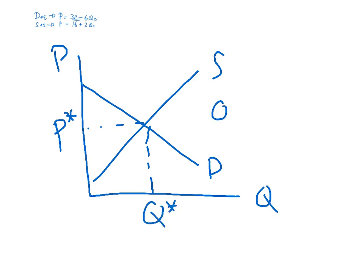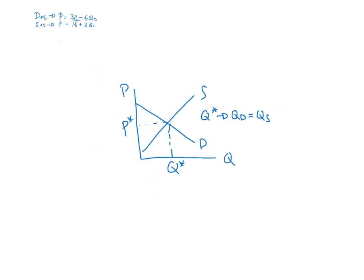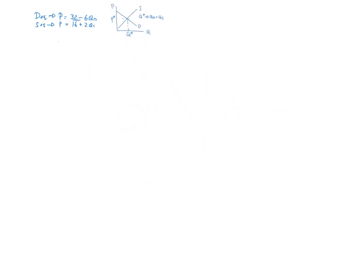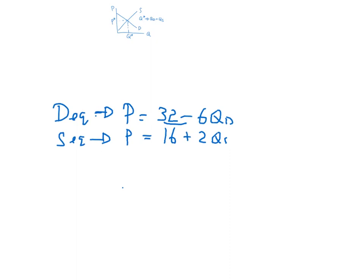Remember, Q star, that is where quantity demanded equals quantity supplied. Which basically means, there is going to be no difference between quantity demanded and quantity supplied. So we can forget about that.